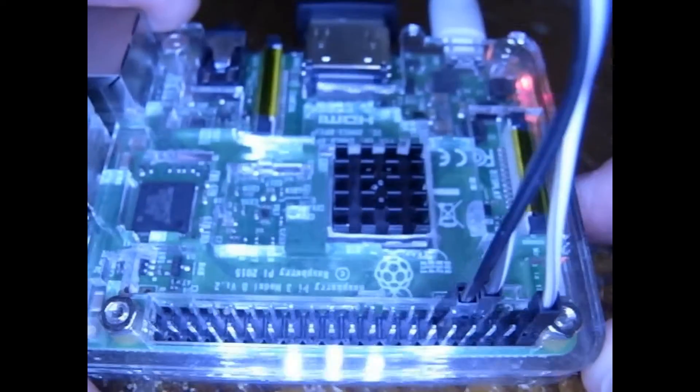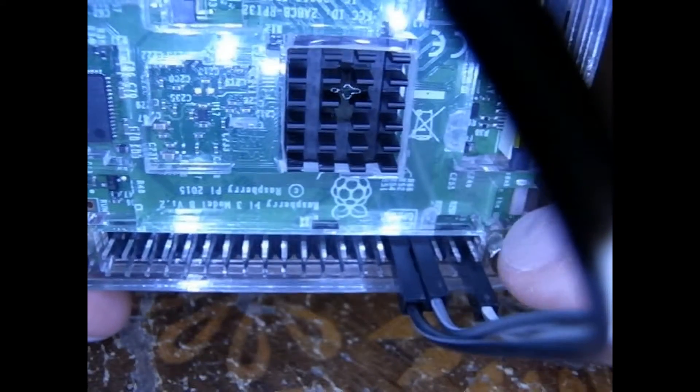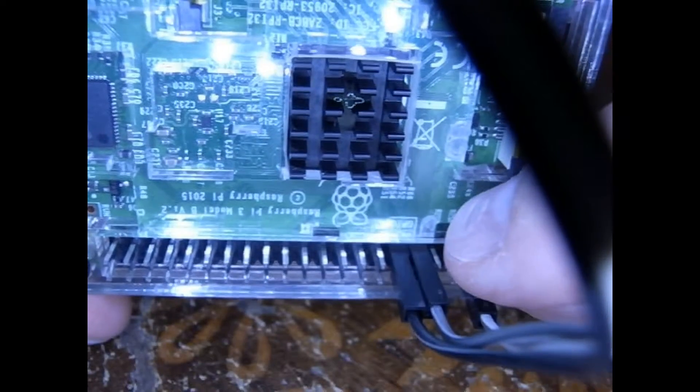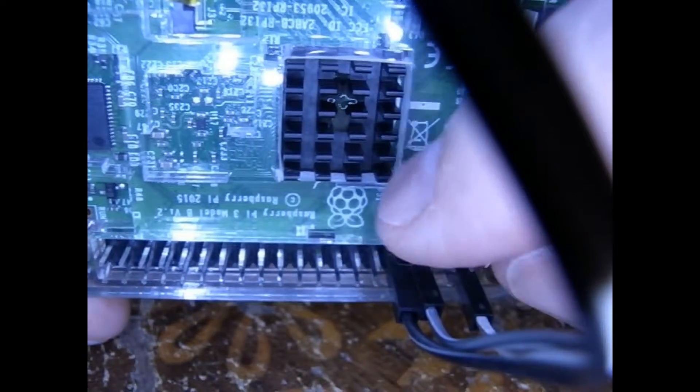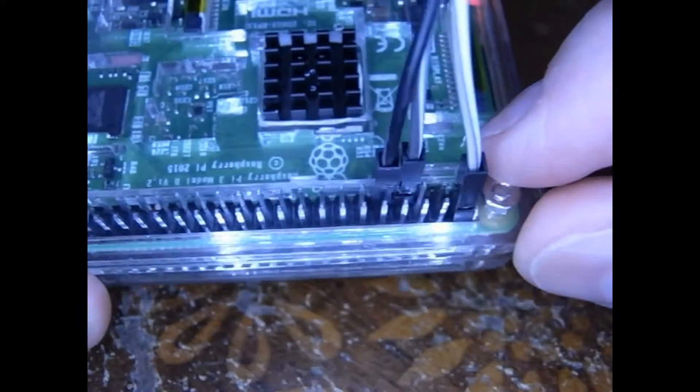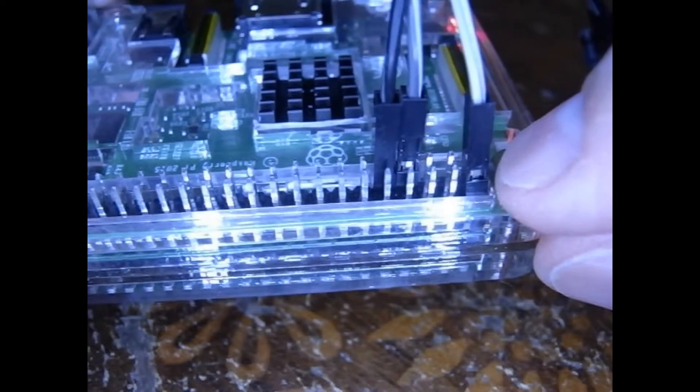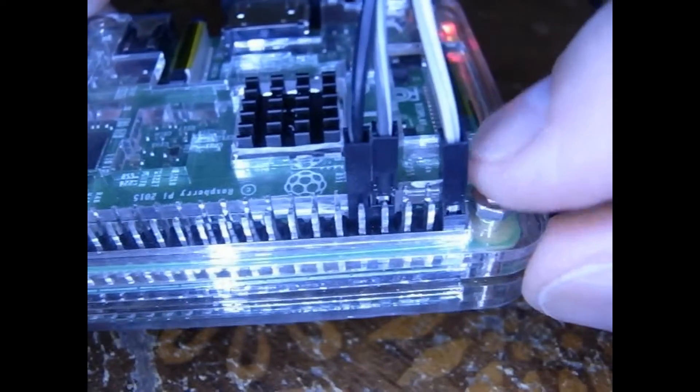On the Pi we simply have, you can see, we have pin 1, 3, 5, 7 is what I'm using as my output. And the next pin is ground. So 9 is ground. On the other side I am using the 5 volt power from the Pi, which is pin 2.